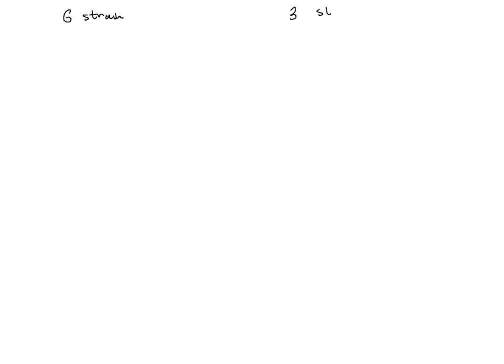Let us now summarize the analogies between stresses and strains. In 3D we have six strain components, in 2D we have three. In 3D we have six stress components and three displacement components.